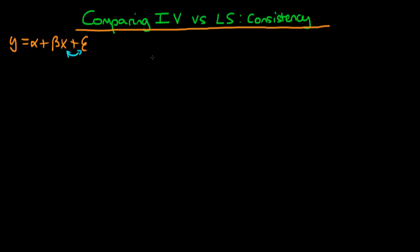X is correlated with the error. So in these circumstances we can derive both the probability limit of beta hat least squares and compare it with the probability limit of beta hat IV.